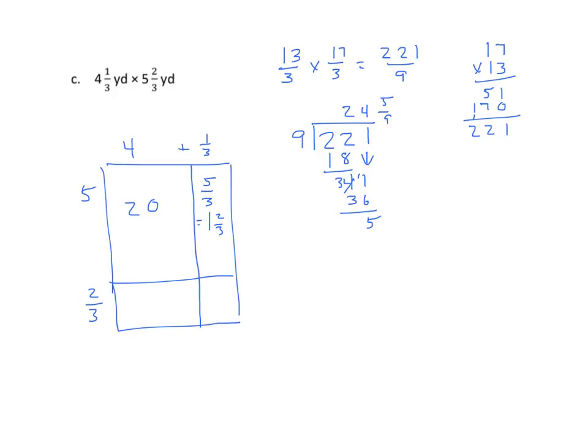4 times 2 thirds is 8 thirds, which equals 2 and 2 thirds. And 1 third times 2 thirds is 2 ninths. Let's find the sum. 20 plus 1 and 2 thirds plus 2 and 2 thirds plus 2 ninths. Find the sum of the whole numbers, and we get 23 plus 2 thirds plus 2 thirds plus 2 ninths.